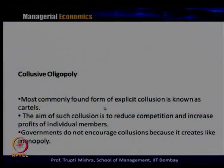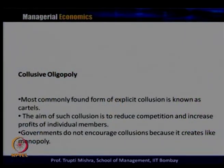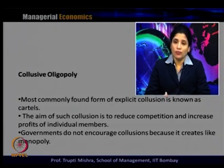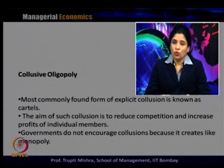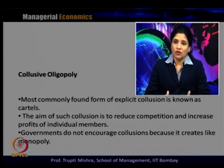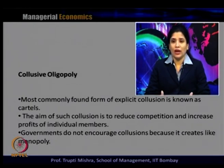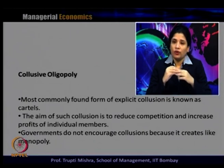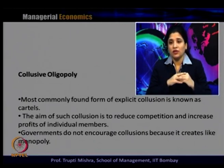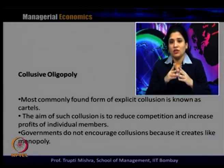The most commonly found form of explicit collusion is generally known as a cartel. The aim of such collusion is to reduce competition and increase the profit of individual members. When they collude together for profit maximization, that reduces competition and increases profit for individual members. Basically, individual firms that were not able to maximize profit are now in a position to do so because the firms work for joint profit maximization and fix a price that gives at least some amount of profit to each firm.